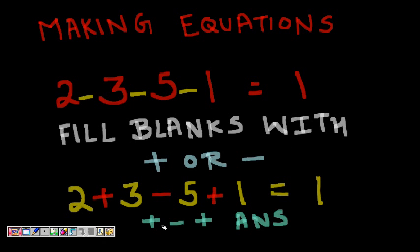The topic is making equations. You are given n numbers — for example, two, three, five, one, and one. There are n minus one numbers on the left-hand side and one number on the right-hand side. You have to fill in the blanks with plus or minus signs so that the left expression equals the right one.